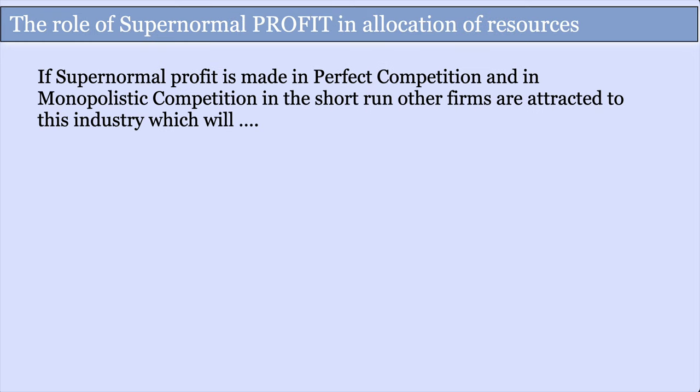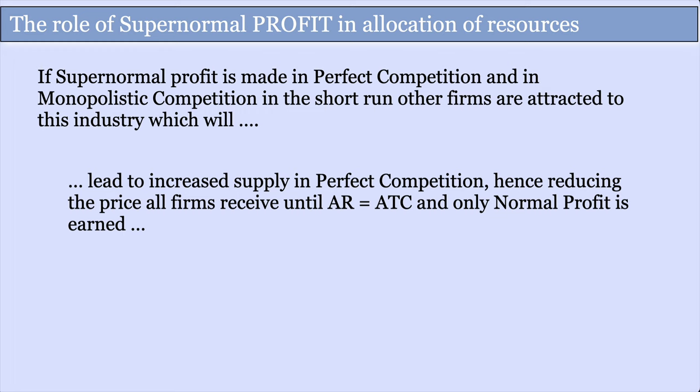If supernormal profit is made, it has an allocation of resources role — it moves factors of production around different industries and firms. In perfect and monopolistic competition, if you're making supernormal profits in the short run, other firms are attracted into the industry, because there's freedom of entry and exit and perfect information. This leads to an increase in supply, which reduces the price until AR equals ATC and only normal profit is earned in the long run.